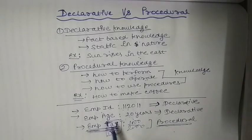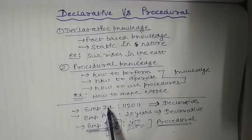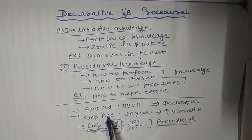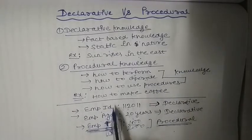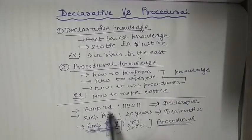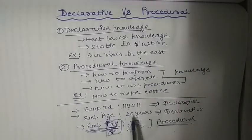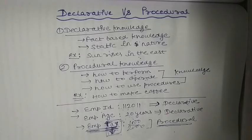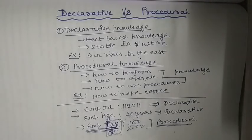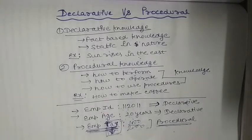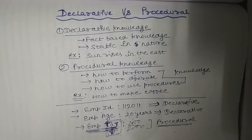To summarize: the employee's ID and age remain constant and static — they are facts, so we don't need to perform or operate anything, making them declarative. But calculating the tax requires knowing procedures, so that becomes procedural. This is the difference between declarative and procedural knowledge.